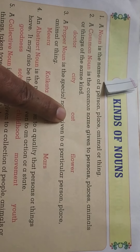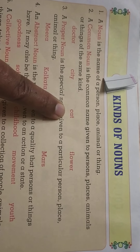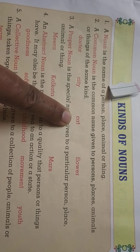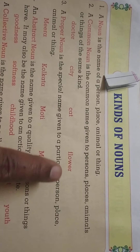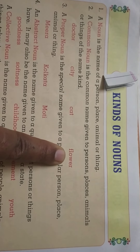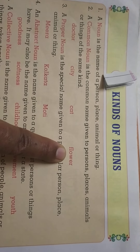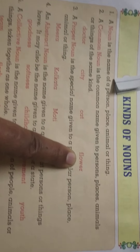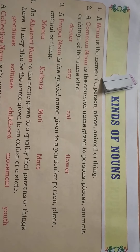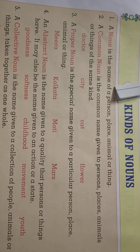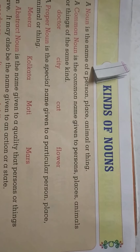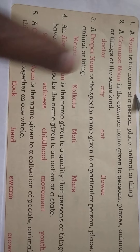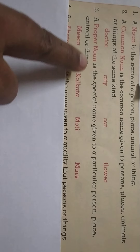Next is 'cat' — we know that cats are also of different kinds, but together we are going to call them 'cat.' Next is 'flower' — we know that different kinds of flowers are there, for example rose, lily, lotus, but what we are going to call them commonly is 'flower.' So common names are the names of a person, place, or animal used commonly.